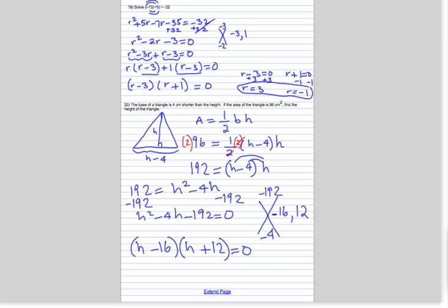Now you set each of these equal to zero, you get h equals 16 and h equals negative 12. But height of a triangle cannot be negative, so we throw away this negative. So the height is 16 and the base is 12, but they only asked us for the height.